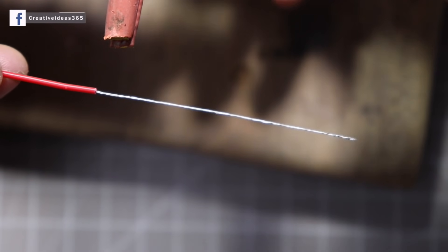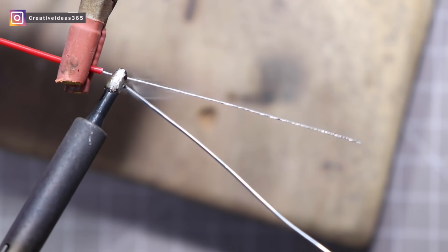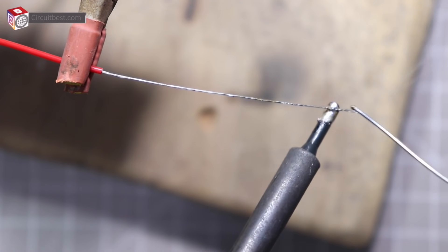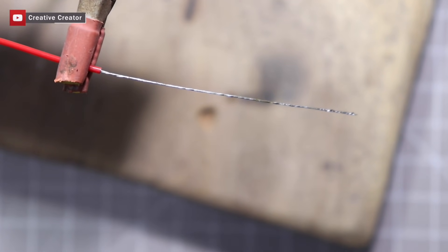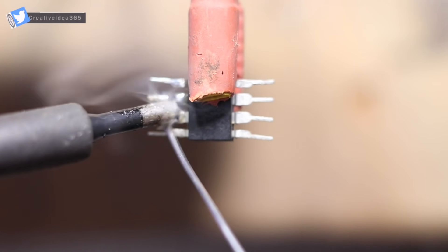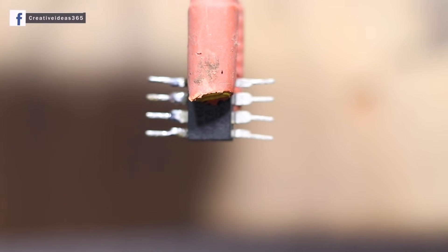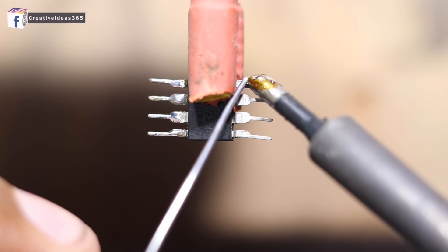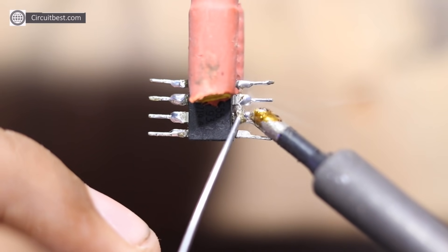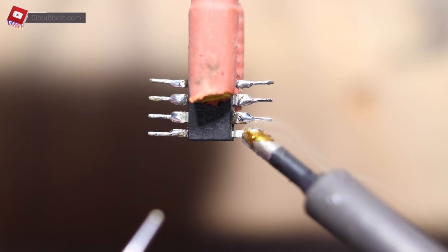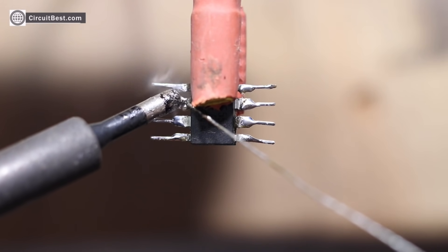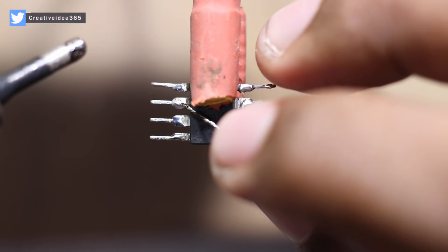Now we will trim the wire for shorting some IC pins. Connect IC pin 2 with pin 6 of the IC.